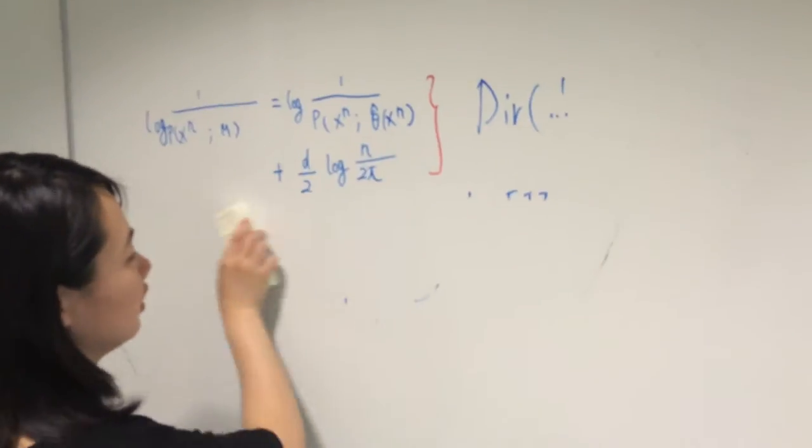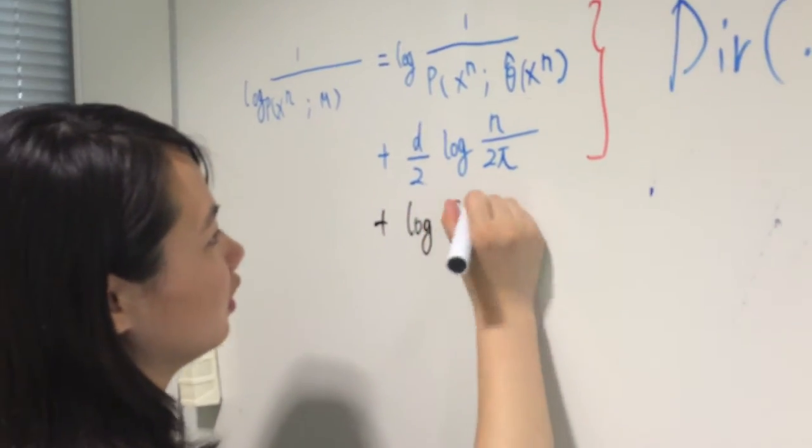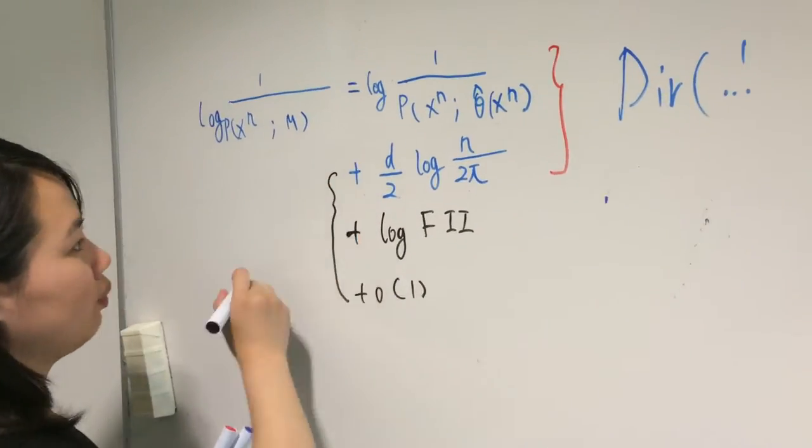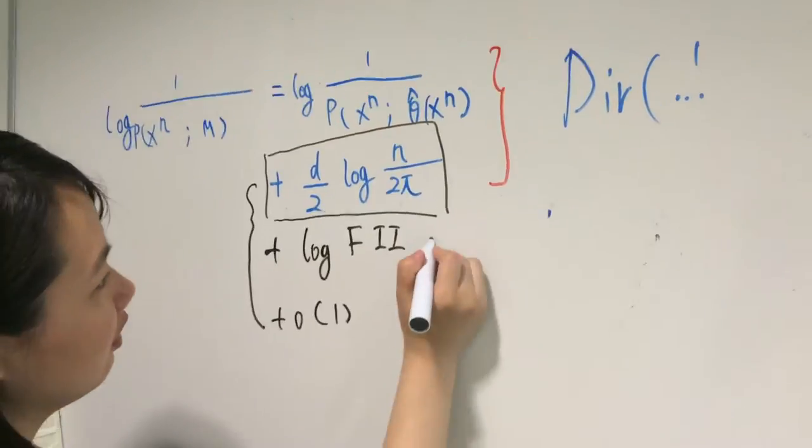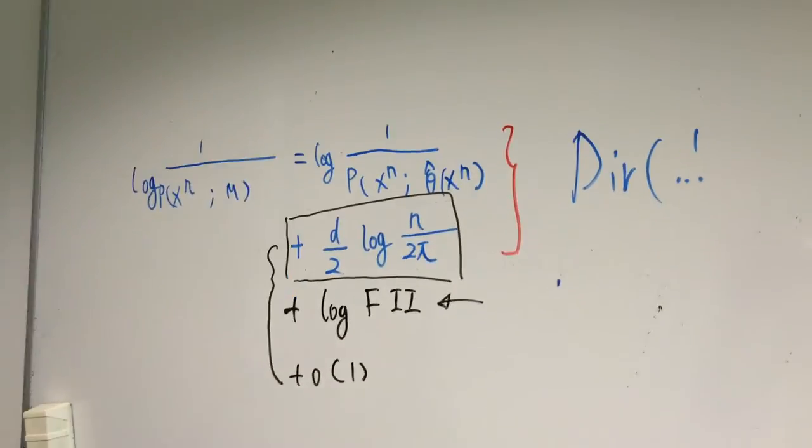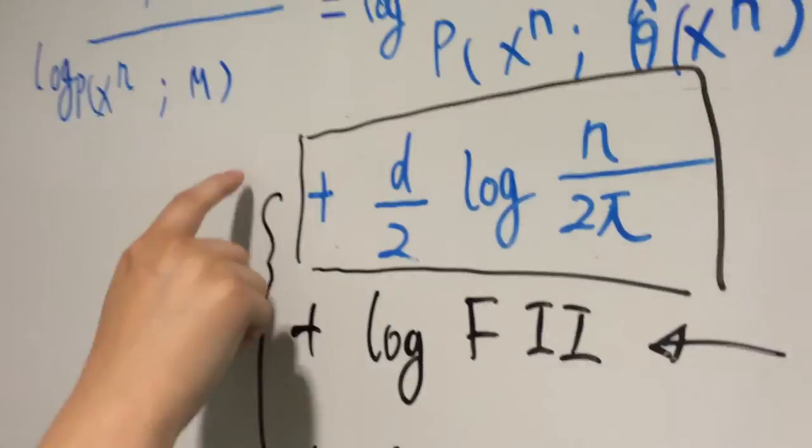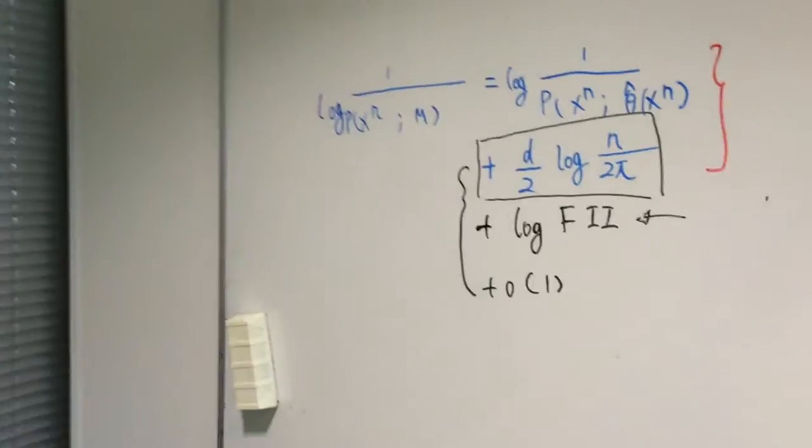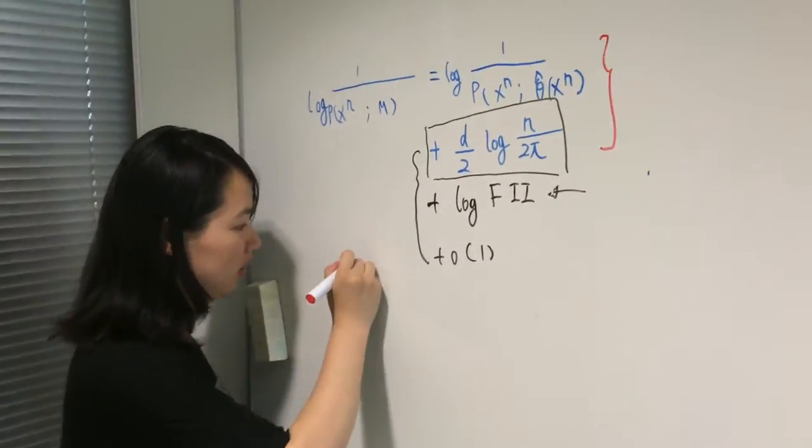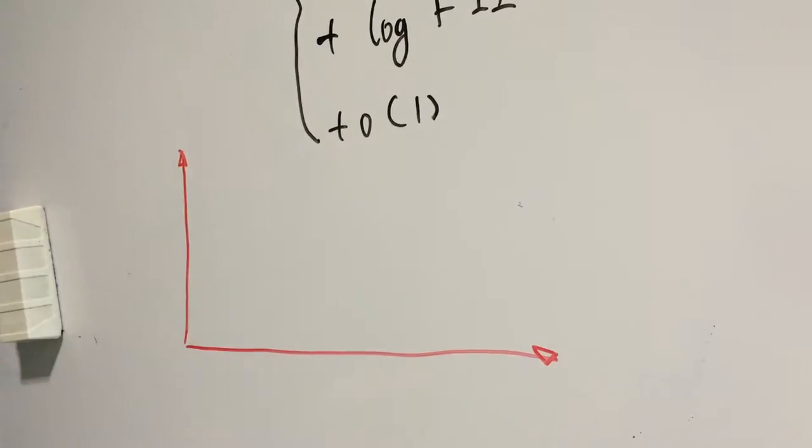Now we can infer log fii and let's see how Fisher information approximation behaves. If BIC model selection criteria only includes the first term, we can estimate log fii by calculating normalized maximum likelihood at large sample size.